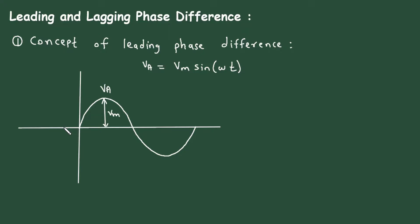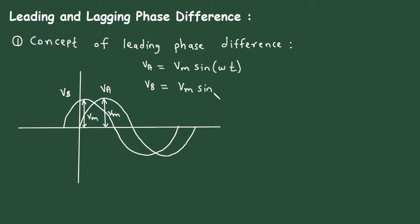There is one more waveform starting from this point with the same amplitude. This waveform is Vb, and it has the same amplitude Vm. Now we can see the Va waveform is starting from zero and Vb is starting from a different point. This difference is called the phase difference and it is represented by phi (φ).